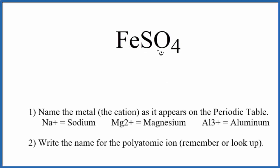To write the name for FeSO4, the first thing we need to notice is we have this SO4. This is a polyatomic ion. It's called the sulfate ion.